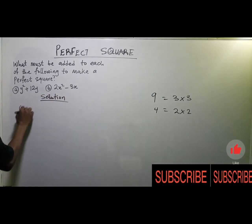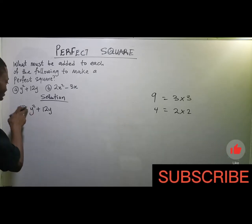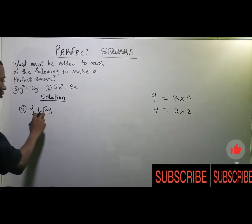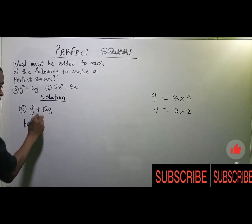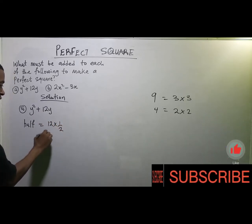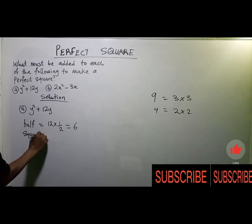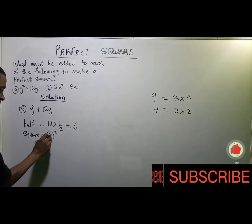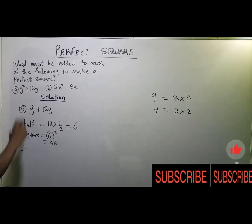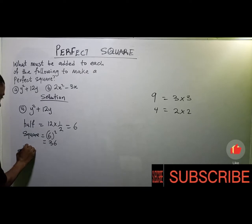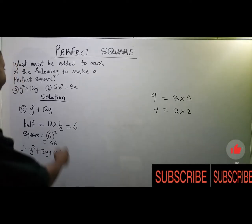Let's take the first one — (a) y² + 12y. The coefficient of y² is already one, so we pay attention to the coefficient of y, which is 12. We half it: 12 × (1/2) = 6. Now we square it: 6² = 6 × 6 = 36. Therefore, 36 added to this expression will make it a perfect square: y² + 12y + 36.